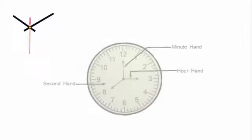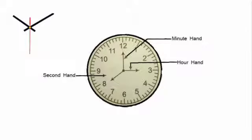Remember, we have three hands on the face of the clock. The minute hand, which is the long, thick hand. The hour hand, which is the short, thick hand. And the tiny, long hand, which is the second hand.